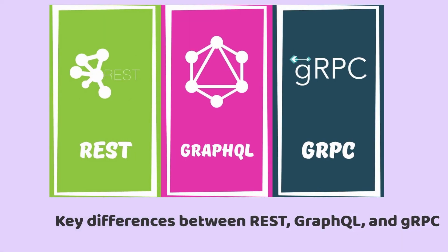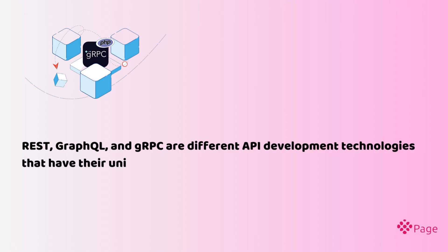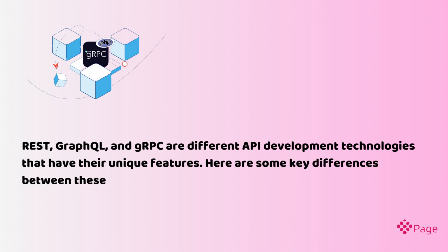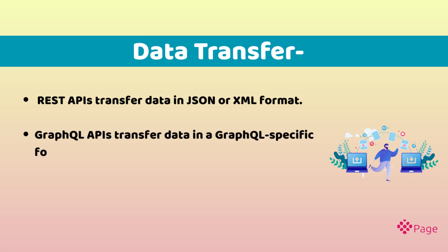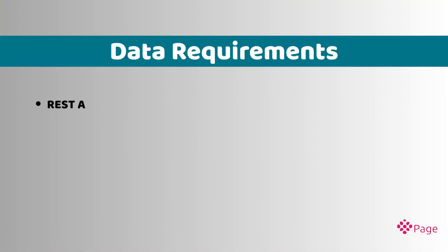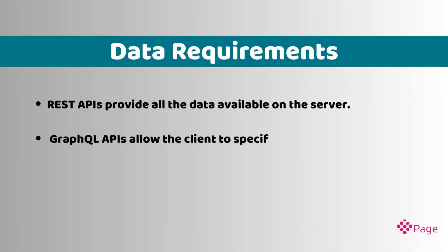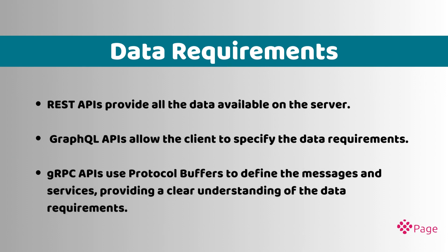Key differences between REST, GraphQL, and gRPC. These technologies have unique features. In terms of data transfer, REST APIs transfer data in JSON or XML format, GraphQL APIs transfer data in a GraphQL-specific format, and gRPC APIs transfer data in protocol buffers format. Regarding data requirements, REST APIs provide all the data available on the server, GraphQL APIs allow the client to specify the data requirements, and gRPC APIs use protocol buffers to define messages and services, providing a clear understanding of the data requirements.